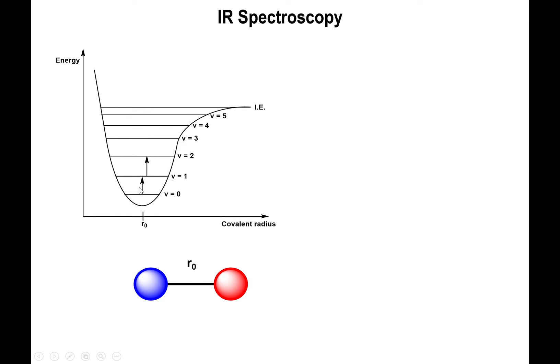What you see right here — these levels, these quantum levels, V equal to zero, V equal to one, two, three, four, five — these are the infrared absorption quantized levels of energy. When you go from V zero to V one, you absorb some amount of infrared light. When you go from V equals zero to V equals two, you absorb some amount of infrared light as well. So you have a unique set of ways in which a molecule can actually absorb infrared light, and that's what we'll utilize to identify molecules and look at an infrared graph.